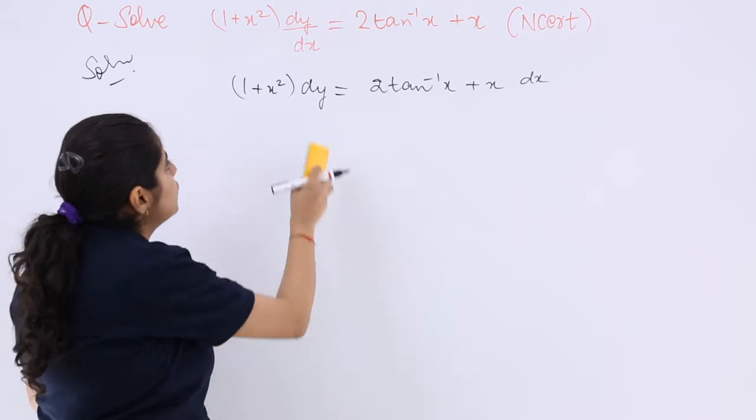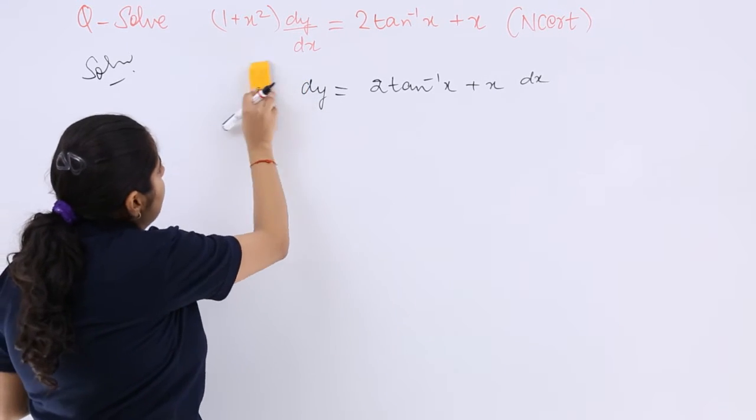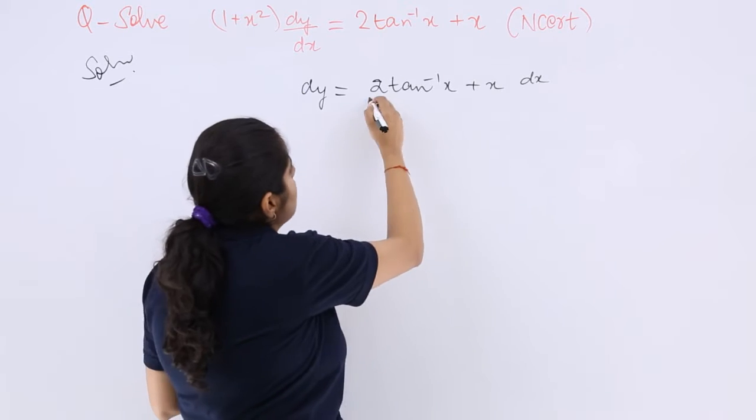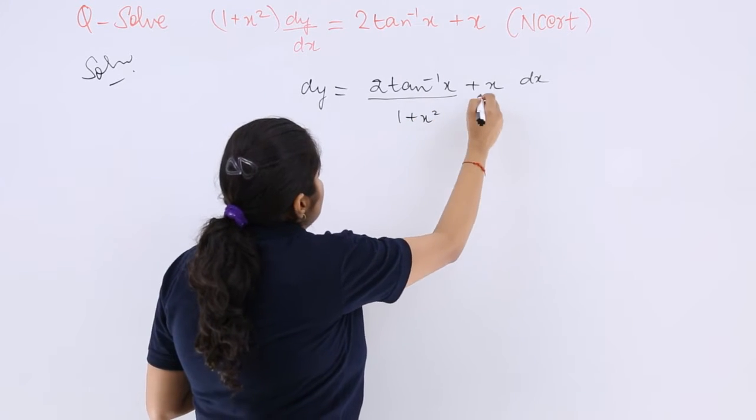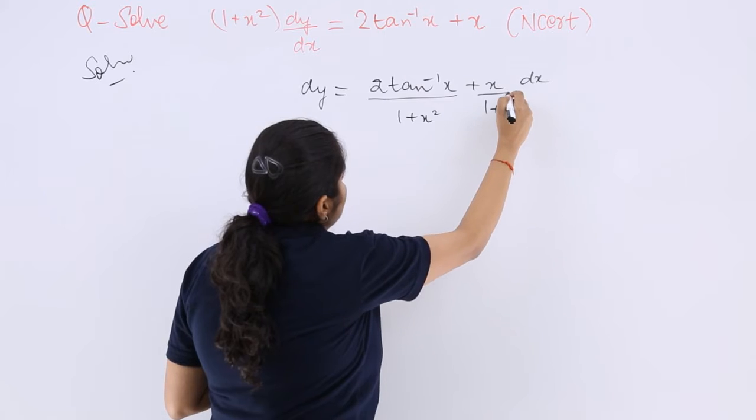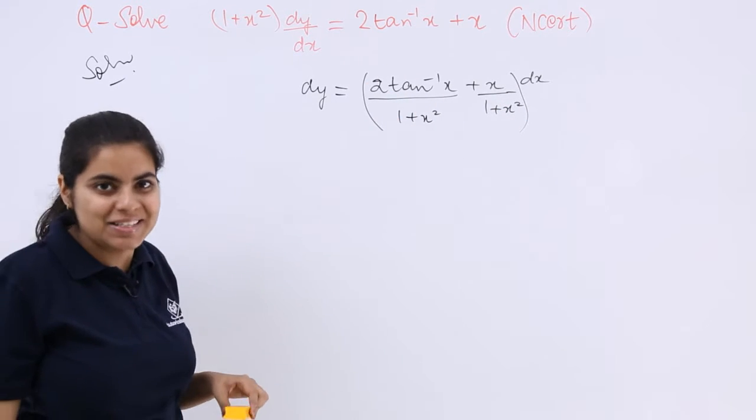Because 1+x² is multiplied with dy. So it is 1+x² here, also it is 1+x², and let's see what happens next.